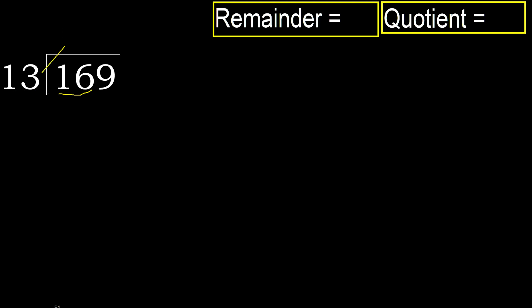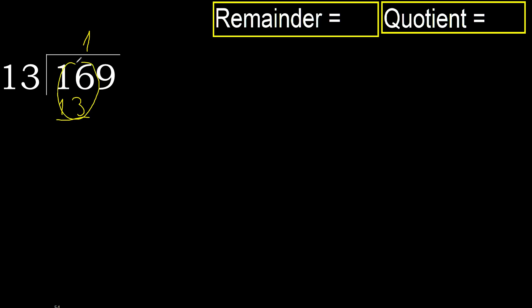13 multiplied by which number is nearest to 16 but not greater? 13 multiplied by 2 is 26, 26 is greater. 13 multiplied by 1 is 13, 13 is not greater. 16 minus 13 is 3, next.